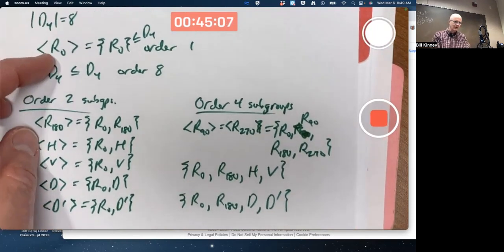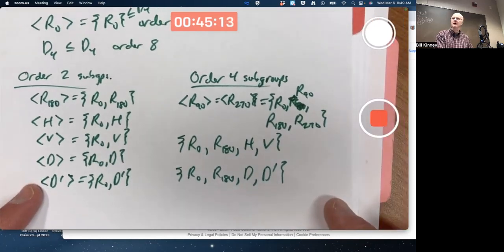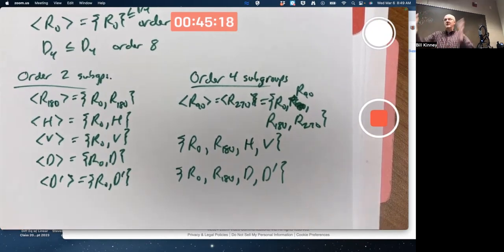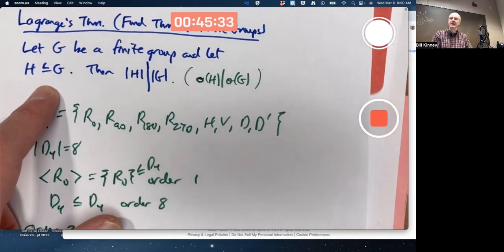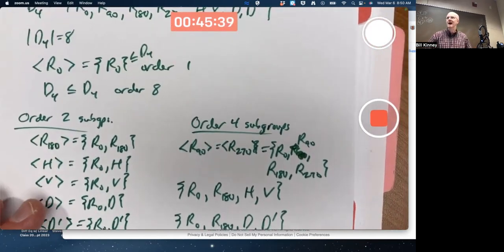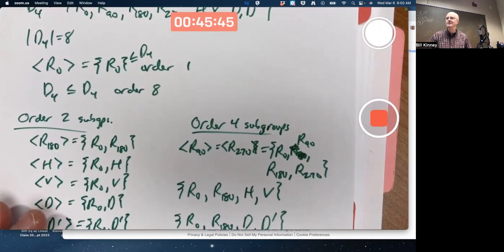So there's one subgroup of order 1, one subgroup of order 8, five subgroups of order 2, and three subgroups of order 4. But there are no subgroups of order 3, for example, or order 7, or order 5, or order 6. And if there were, that would be a contradiction of Lagrange's theorem. Because Lagrange's theorem says if you've got a subgroup of a finite group, the order has to divide the order of the entire group. So you can't have subgroup of order 3, 5, 6, or 7 in a group of order 8. It rules things out. Rules possibilities out. That's pretty powerful.